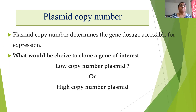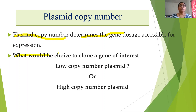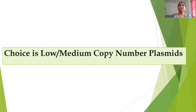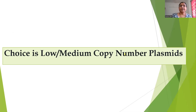A bacterial cell consisting of about five copies of a plasmid is called a low copy number plasmid. About 20–30 copies is medium copy number, and hundreds of plasmids present in a bacterial cell is called high copy number. The plasmid copy number determines the gene dosage accessible for expression. So what is the choice to clone a gene of interest — low, medium, or high copy number?